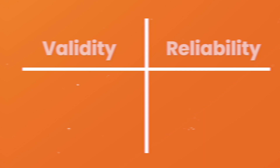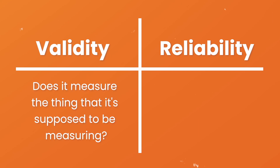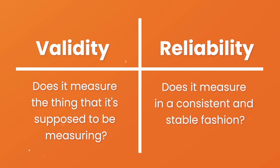Hopefully you now have a clearer understanding of validity and reliability. To recap: validity is concerned with whether an instrument is measuring the thing it's supposed to measure, and reliability is concerned with whether that measurement is consistent and stable. Therefore, both are essential to ensuring that your data collection efforts deliver high quality, accurate data that help you answer your research questions.